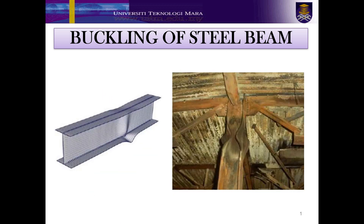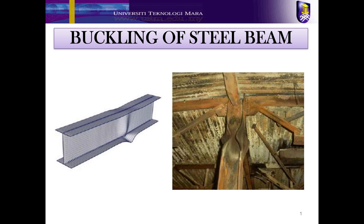Local buckling is the buckling of the plate elements of the cross section under compression shear. Local buckling may take place before the overall beam failure, lateral buckling, or yielding. As you can see, the local buckling phenomenon only occurs at either the flange or web of the steel beam.